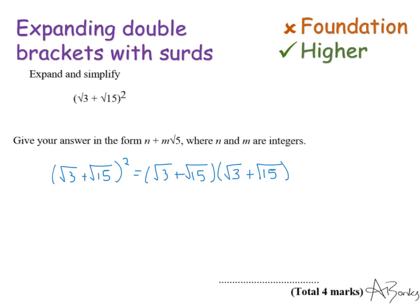As before, I'm going to use my FOIL method. So root three times root three is three. Then I have root three times root fifteen, which is root forty-five. And then I need to do root fifteen times root three again, which is another root forty-five. And then on the end, root fifteen times root fifteen is fifteen.